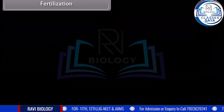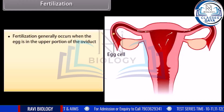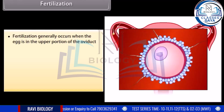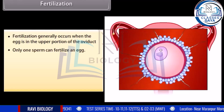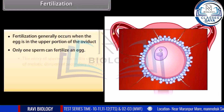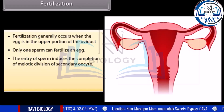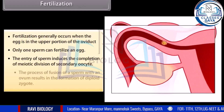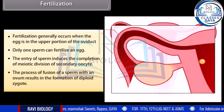Fertilization generally occurs when the egg is in the upper portion of the oviduct. Only one sperm can fertilize an egg. The entry of sperm induces the completion of meiotic division of the secondary oocyte. The process of fusion of a sperm with an ovum results in the formation of a diploid zygote.